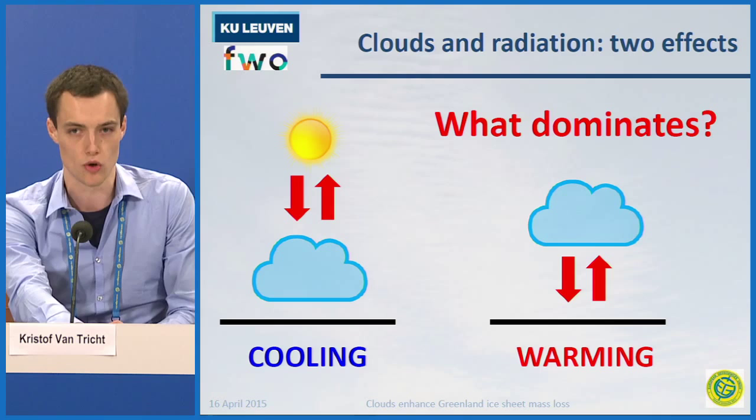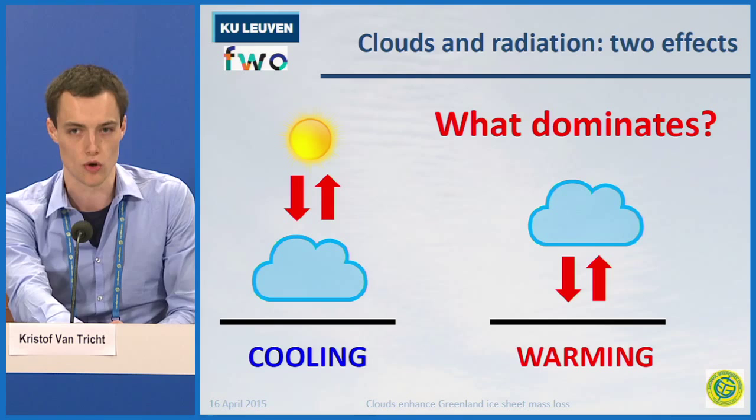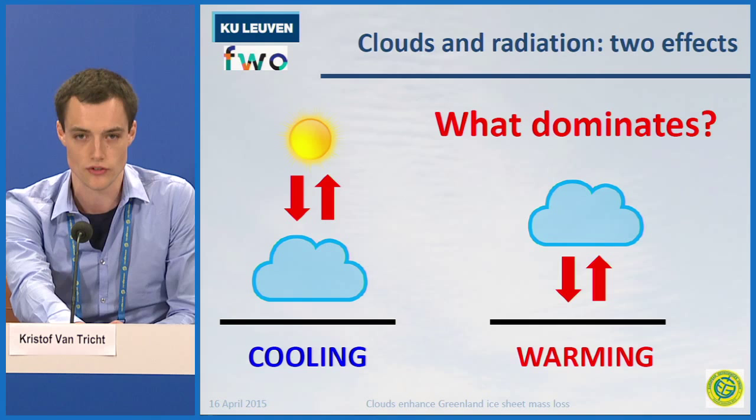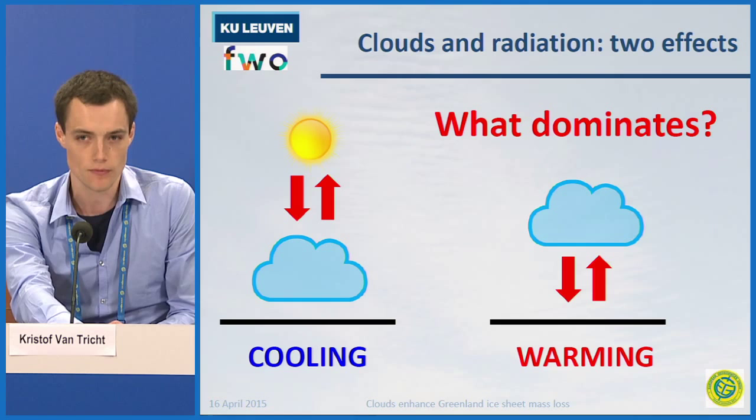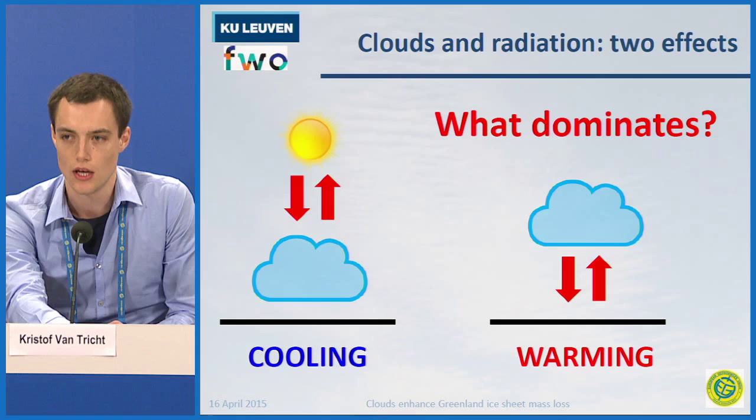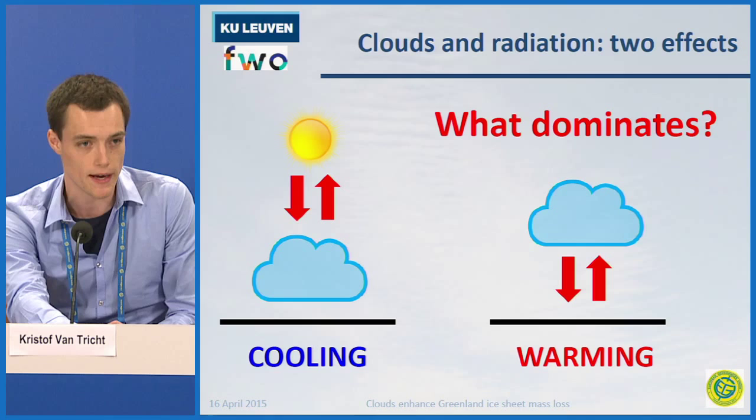On a global scale, on average, clouds tend to cool the Earth's surface, but there are many regional differences. In particular, over the Greenland ice sheet, we know that clouds tend to warm the surface — the warming effect dominates. But because of limited observations due to the remoteness of the area, we just don't know by how much they warm the ice sheet, let alone how this impacts the surface mass balance.